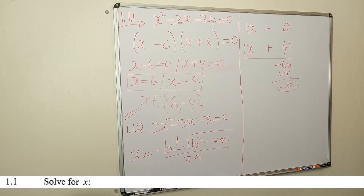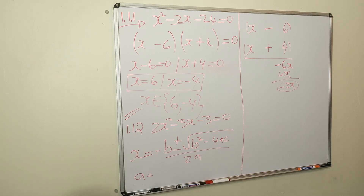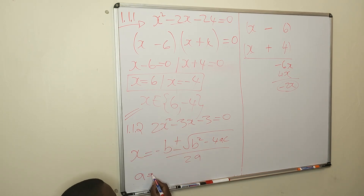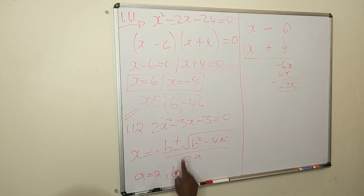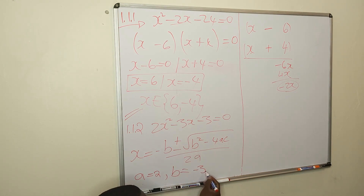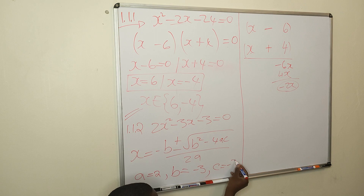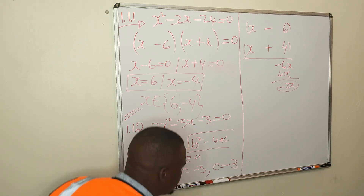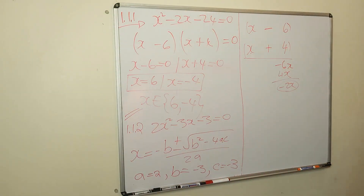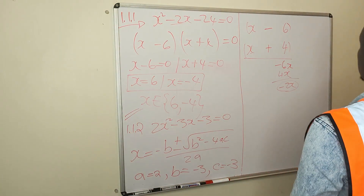You've got to ask yourself what is your a, b, and c. A is the coefficient of x squared — here it's 2, so a = 2. B is the coefficient of x — the coefficient is -3, so b = -3. And c is the constant, which is -3. Then you substitute all these values into the quadratic formula to find the x values.